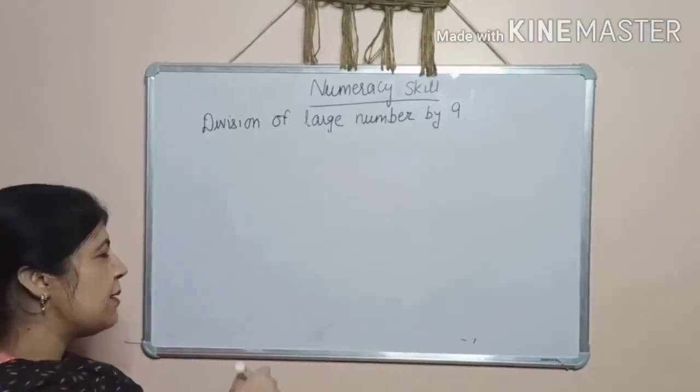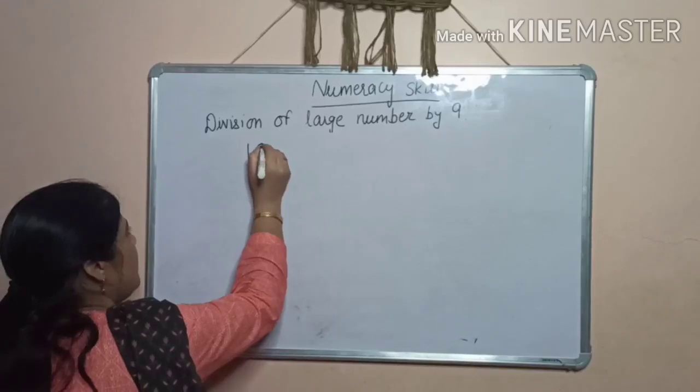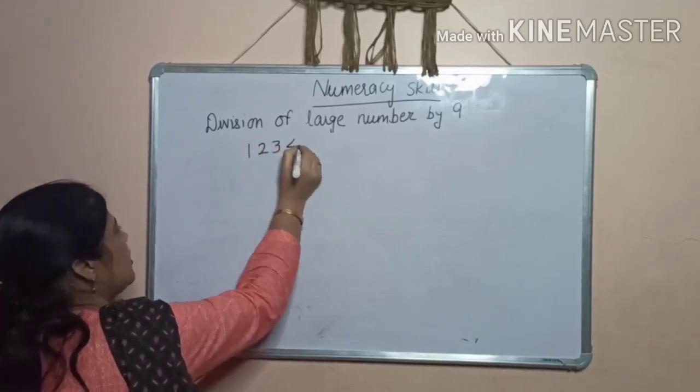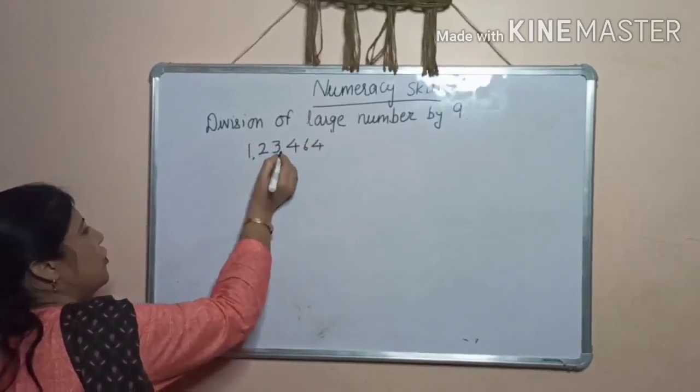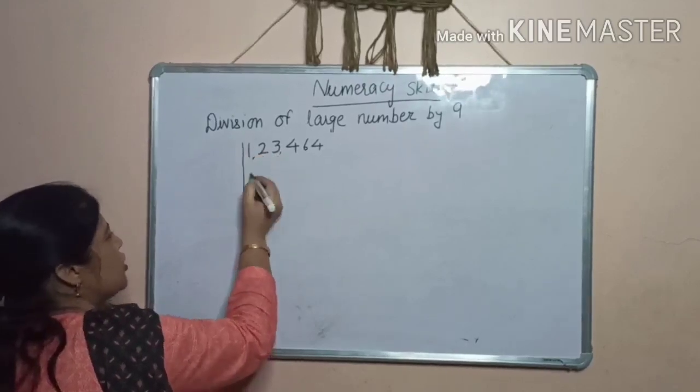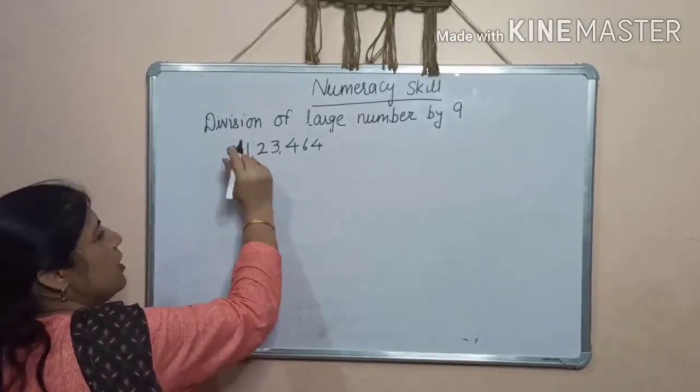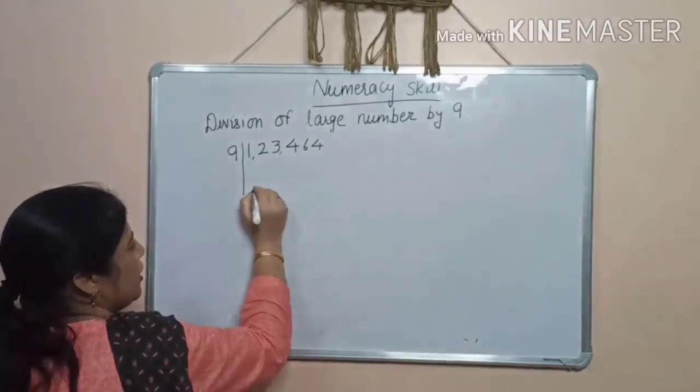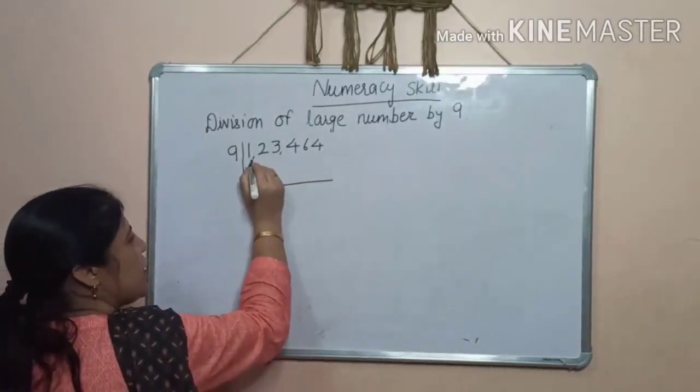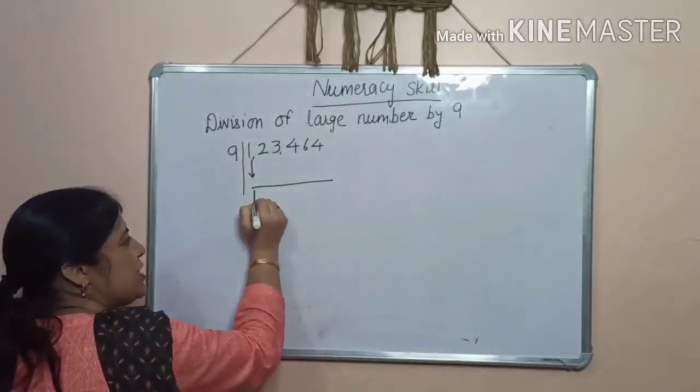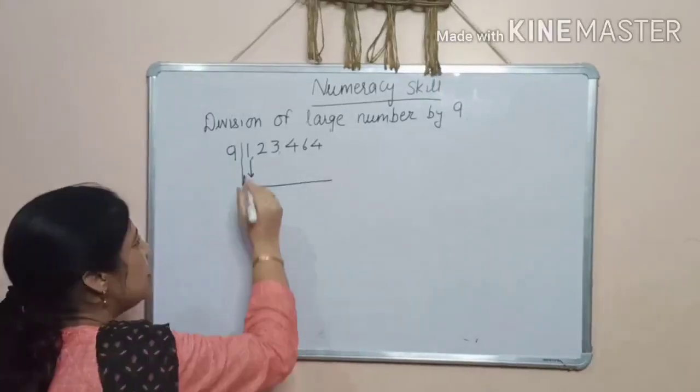Now, let's take one more example. 1,23,464. Now, divide this large number by 9 by using this trick. And, you know very well. First step. Write first digit as it is.